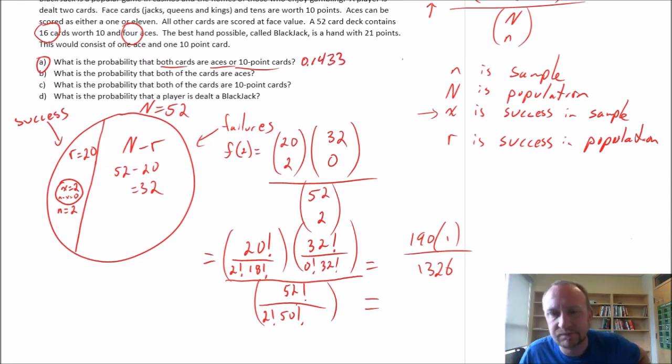So there's call it a 14.3% chance that my two cards will both be defined as a success, which in this case means my two cards will be either aces, tens, or ace and tens. So we're really looking at the union of events. It's either tens, it's either aces, or it's either ace and 10. Those are all our successes. The 14 and a third percent chance that our two cards that we draw are both deemed a success in this case.